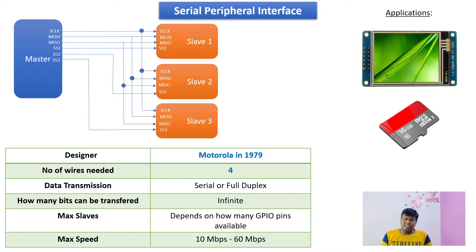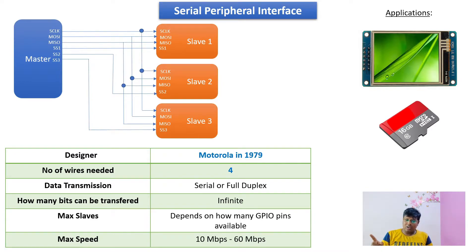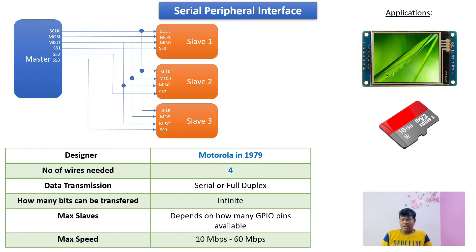Data transmission in SPI can be done serially — either the master talks to the slave or the slave talks to the master — or it can be full duplex, where the master and slave communicate simultaneously. The maximum number of slaves SPI supports depends on the number of GPIO pins available on the processor or controller.